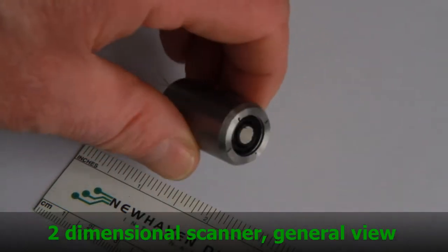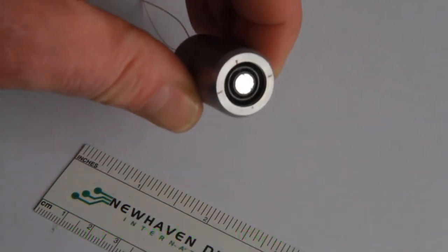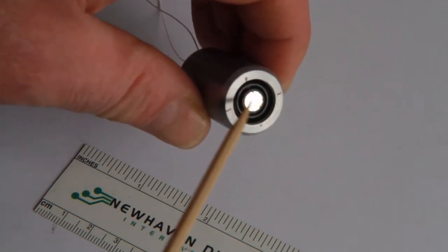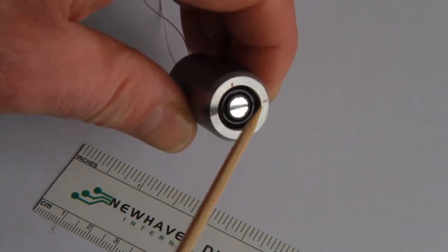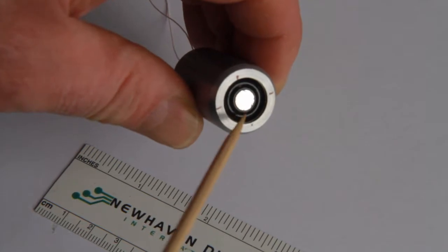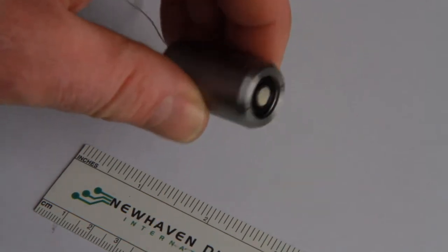Here is a common view of a 2D scanner. You can see the moving mirror and gimbal mounting with jewel bearings.